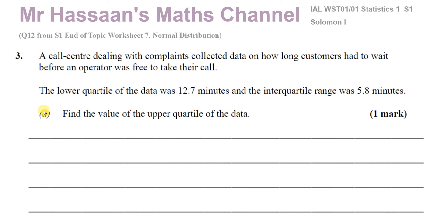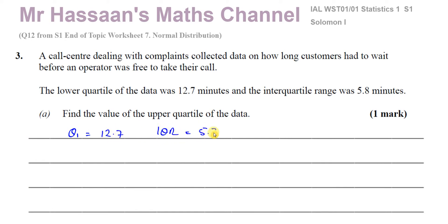Part A tells us that there's a call center dealing with complaints that collected data on how long customers had to wait before an operator was free to take their call. The lower quartile of the data was 12.7 minutes and the interquartile range was 5.8 minutes. We need to find the value of the upper quartile. So we know Q1 is 12.7, the interquartile range is 5.8, and we need to find Q3.